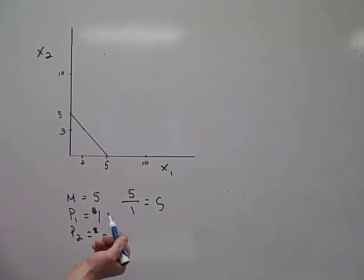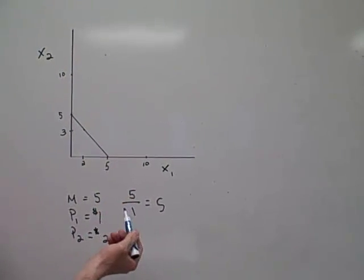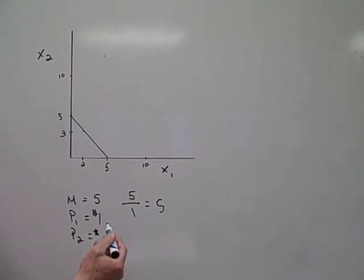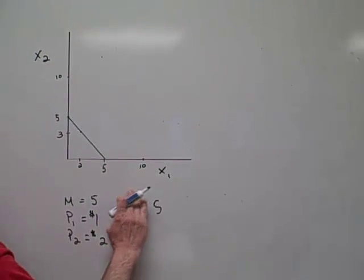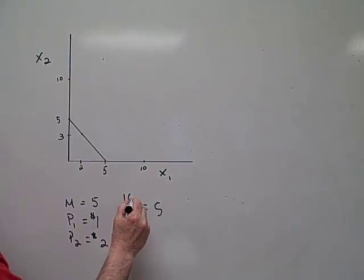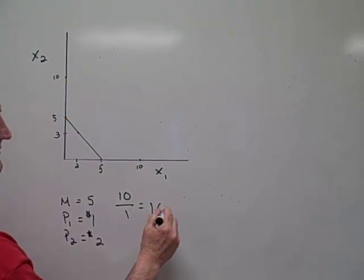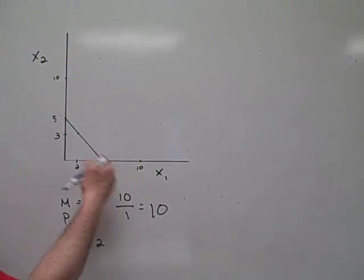Now suppose that the income of the consumer goes up to 10. Well, assuming that the prices stay the same, now they can buy 10 of each good.